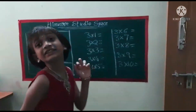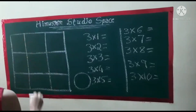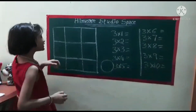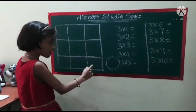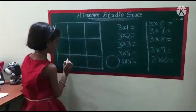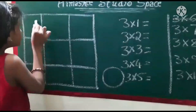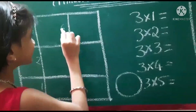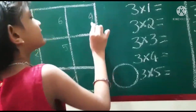First you need a three by three grid for this. Here you have to write one to nine from bottom to top. One, two, three, four, five, six, seven, eight, nine.